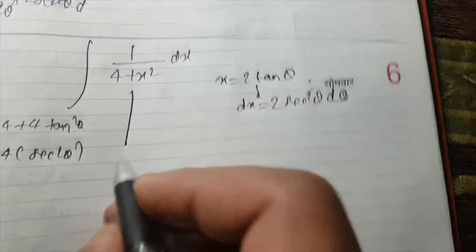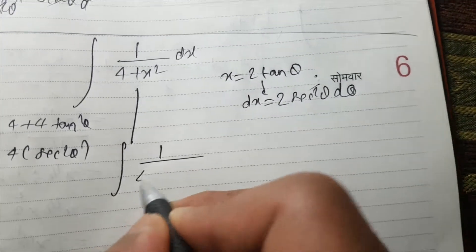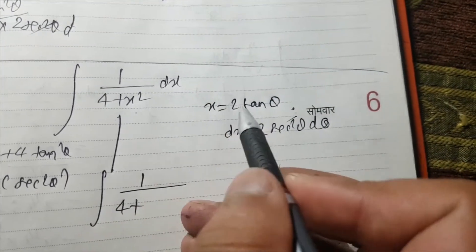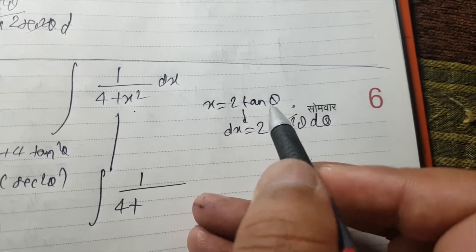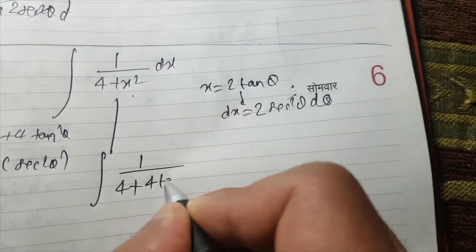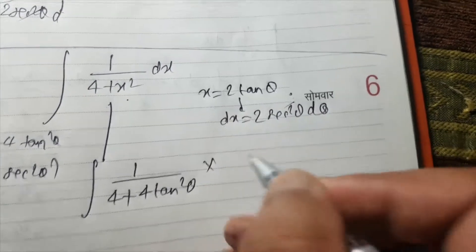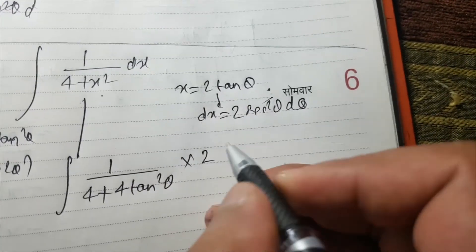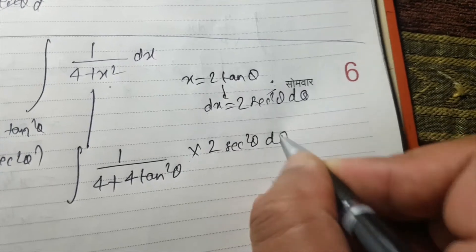So this is 1 upon 4 plus, in place of x square we will have 2 tan theta whole square, which is 4 tan square theta. And in place of dx we will place 2 sec square theta d theta.